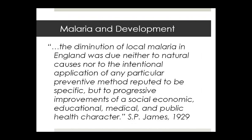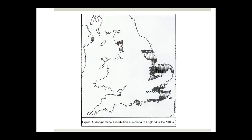John S.B. James from Great Britain pointed out that the history of malaria in England followed a similar course — the diminution of local malaria in England was due neither to natural causes, nor to the intentional application of any particular preventive method, but to the progressive improvements of a social, economic, educational, medical, and public health character.